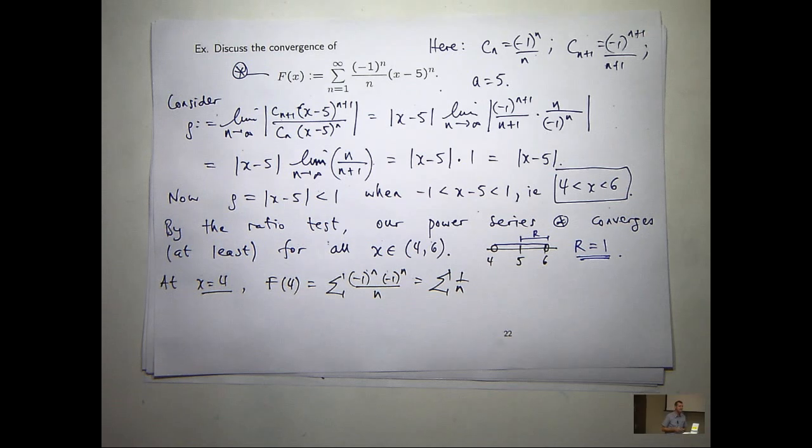What does this series do down the bottom? Sigma 1 on n. Does it converge or diverge? It diverges, right? So, in other words, f of 4, well, it's got no meaning. It doesn't... It's not well-defined.